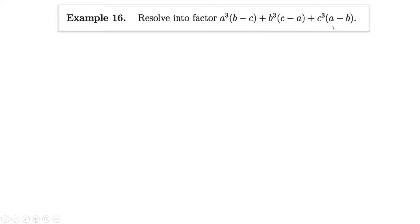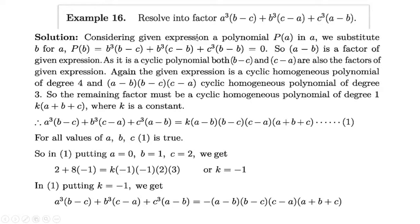Example 16: resolve into factors a³(b − c) + b³(c − a) + c³(a − b). This is also a cyclic polynomial, of degree 4. Similar to the previous example, considering the given expression as a polynomial of a single variable, let p(a) be the expression. Substituting b in place of a, we get p(b) = 0. Therefore (a − b) is a factor. Since it is a cyclic polynomial, both (b − c) and (c − a) are also factors. So we write the factorization as k(a − b)(b − c)(c − a) times another factor.